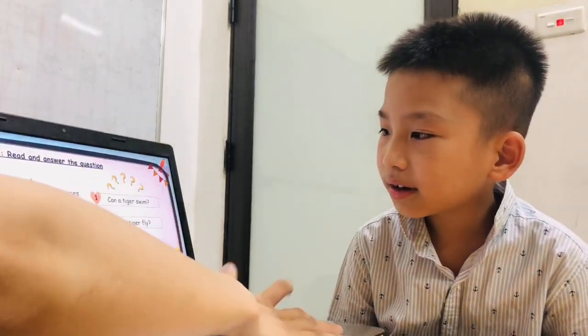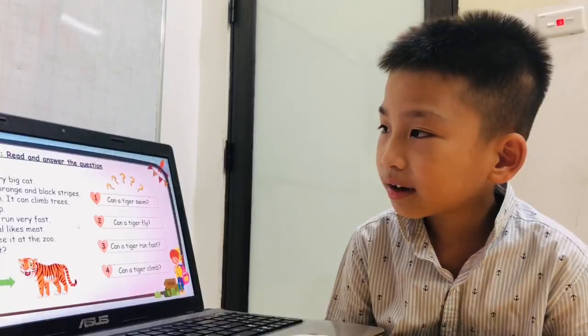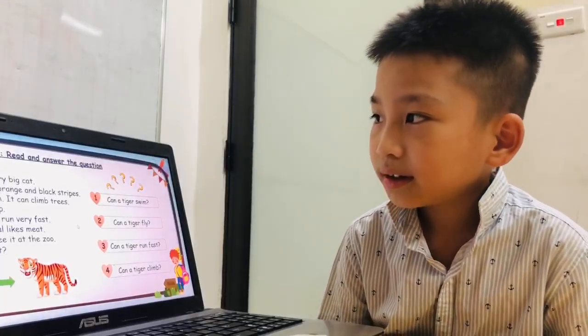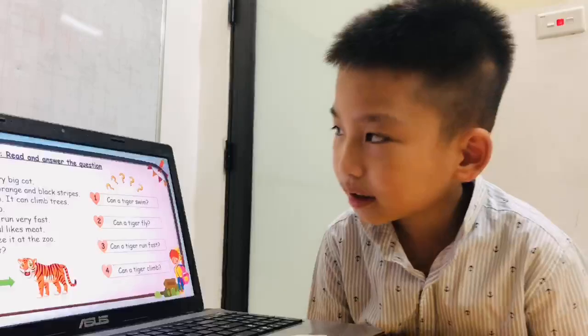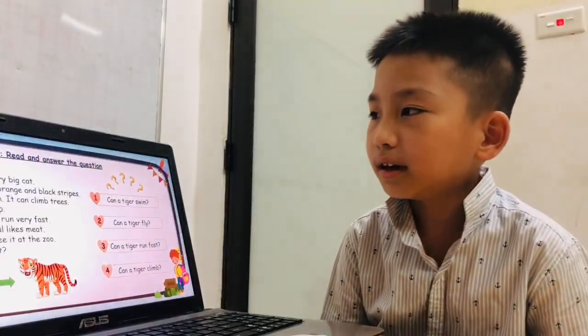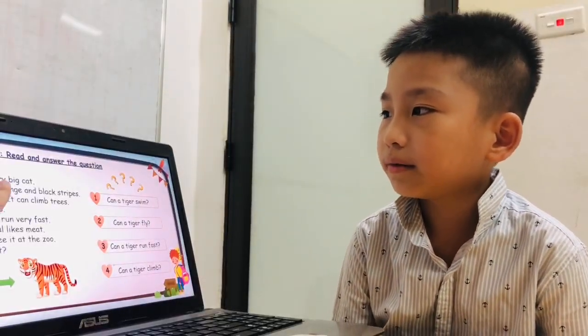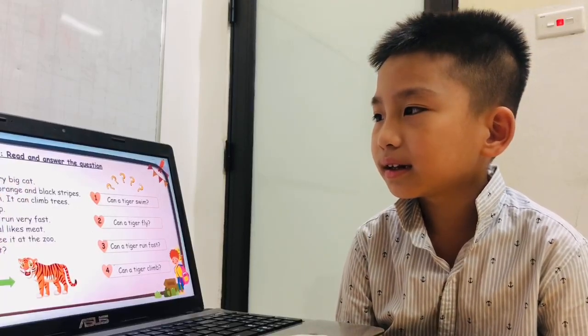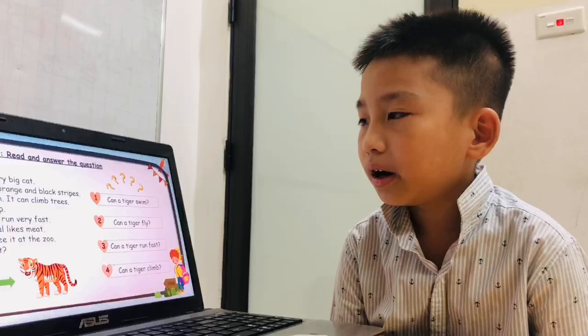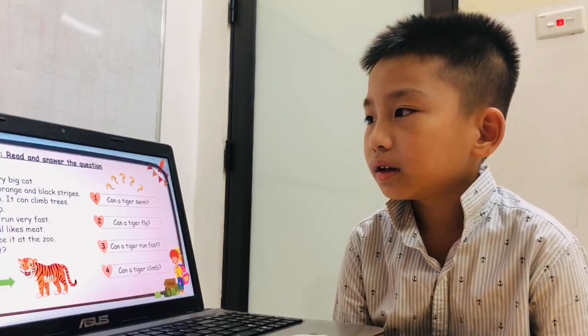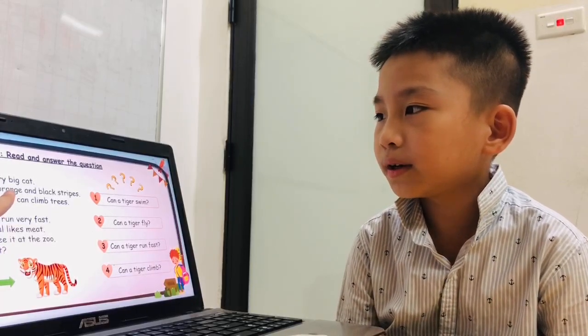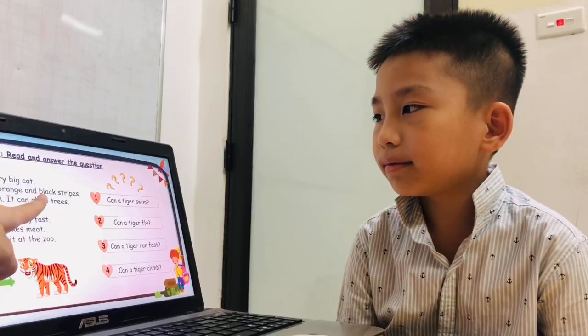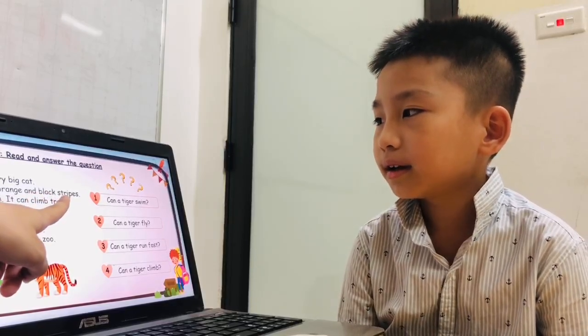And the last part, you need to read this paragraph. This is a very big cat. This is a very big cat. This is a black orange and black stripes.